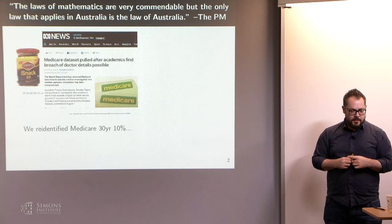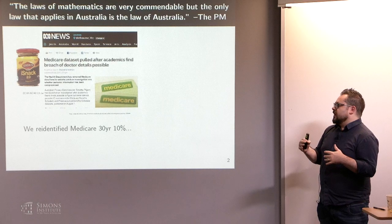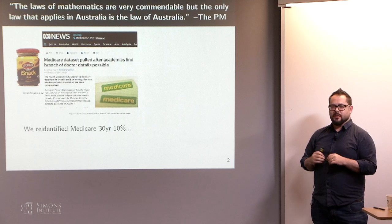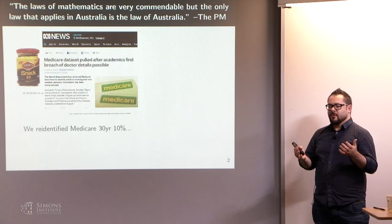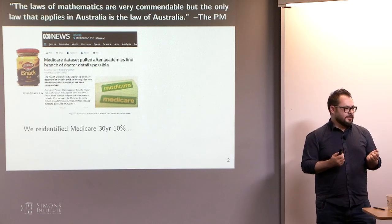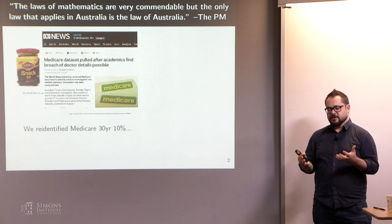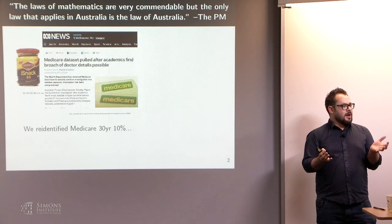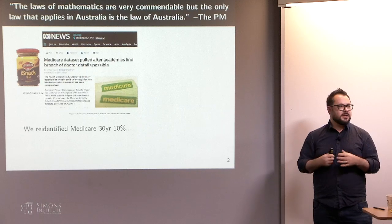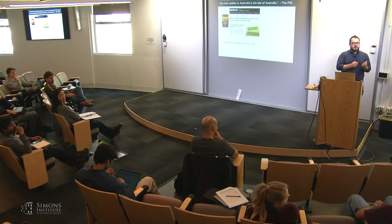With Melbourne colleagues Vanessa Teague and Chris Colnane, we re-identified doctors in the dataset. We reversed these one-way hash functions, which clearly weren't used properly. Then we re-identified patients in the dataset. You can do things like looking at the dates that a mother has had children — if the mother's had several children, the dates are quite unique and you can link them to other information online. So this is a case of something where maybe they could have used differential privacy — it was a linkage attack.